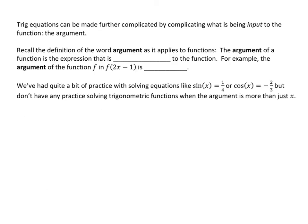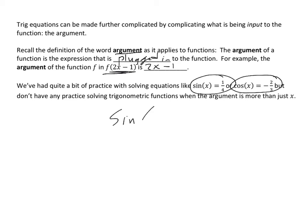This last segment covers how to deal with trig functions where the argument — the expression inside the function — is not just x. The argument of a function is the expression that is plugged in: for example, the argument of f(2x − 1) is 2x − 1. We know how to solve basic trig equations, but we don't yet have experience with something like sine(2x − 1) equals 1/4. That's what we'll get into with these final examples.